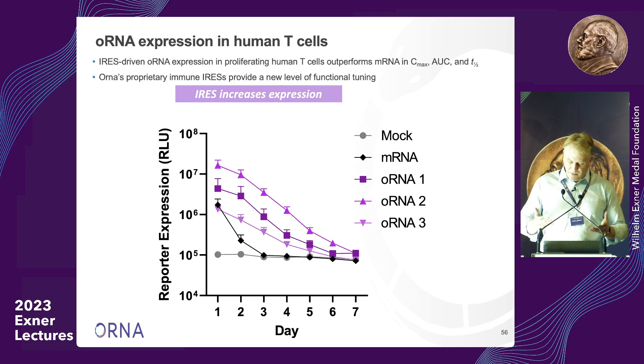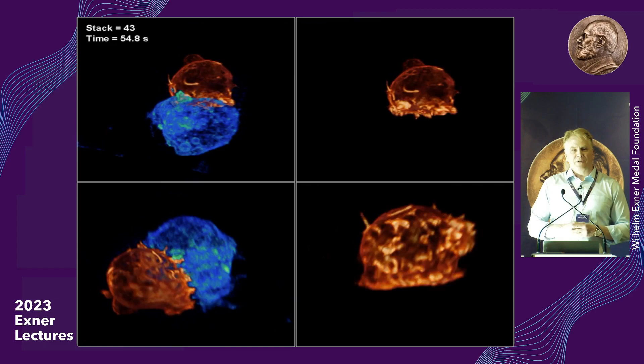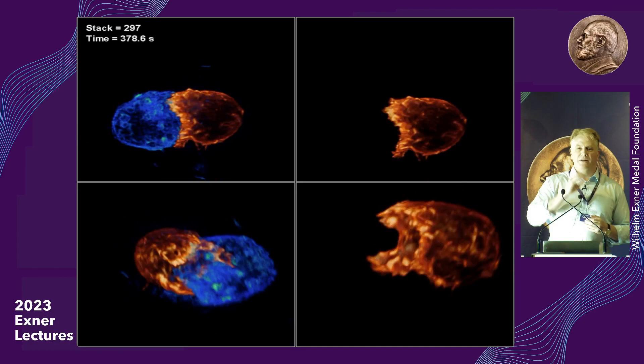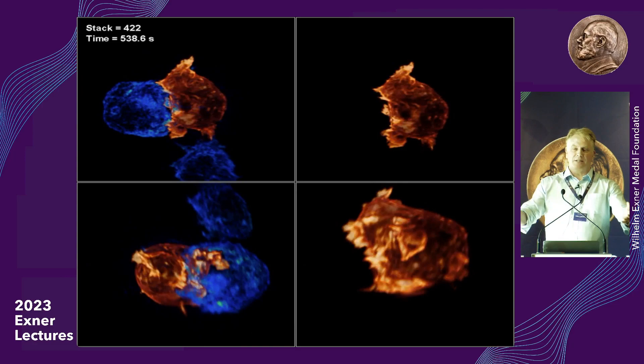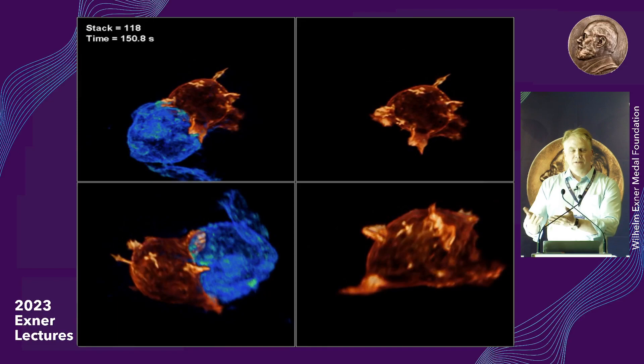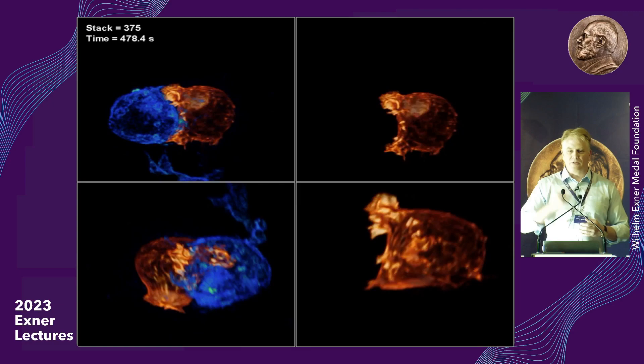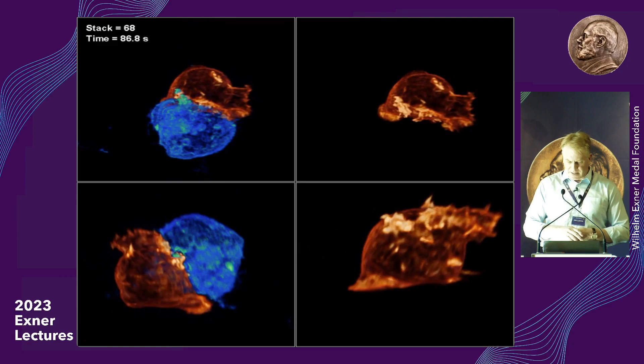So what might we want to do? The first thing Orna is focused on is reprogramming T cells in the body to attack different cancers. There are really exciting data showing that in humans you can take T cells out of a patient, change them genetically, and put them back — but it's a tedious process with a lot of potential side effects. However, it is a powerful way to treat cancer. We're hopeful that we can inject a nanoparticle with a circle and make these cancer-attacking T cells in the body.